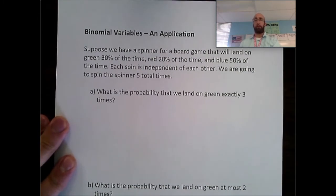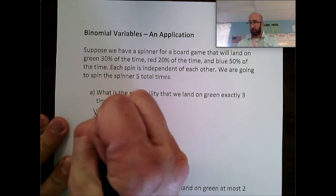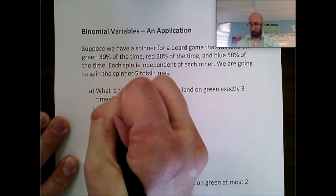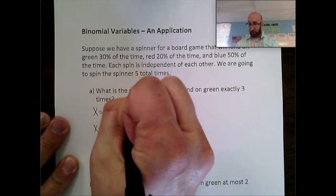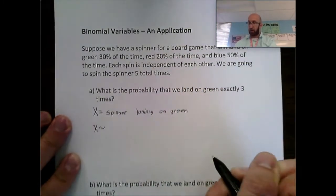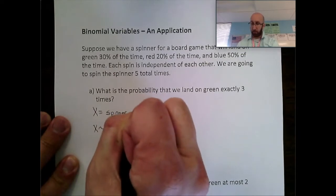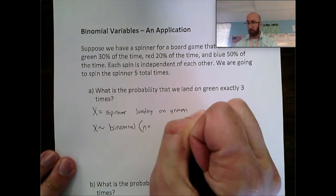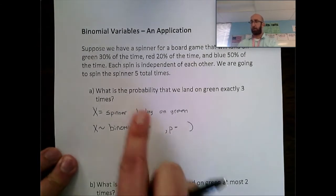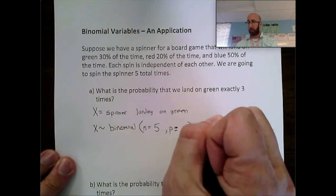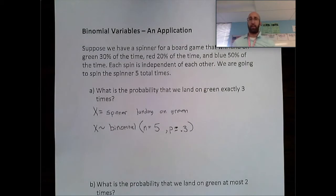Let's start by defining X and communicating that this variable is binomial. X is the spinner landing on green. We know this is a binomial situation. The things we need are: how many total trials and what's the probability of success. The number of trials is five, so n = 5. We're trying to get green, which happens 30% of the time, so the probability of success p = 0.3.